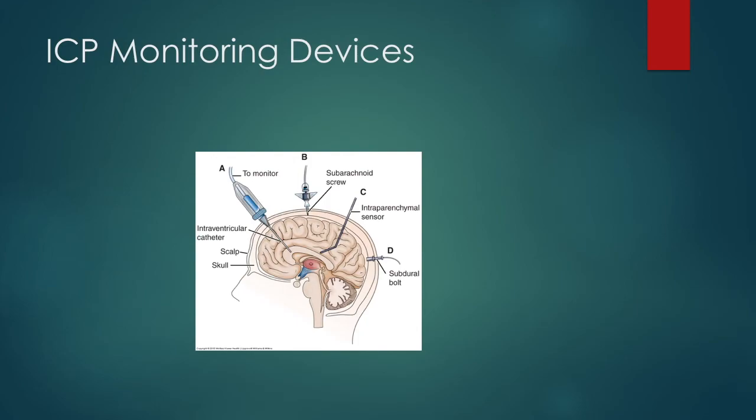This is a picture of some of the monitoring devices. We can put our ICP monitor in there — it actually just monitors the pressure. You can see some of those subarachnoid screws and bolts. All of these are different monitoring devices in different locations. For all of them, remember we have to keep that head in that neutral position and minimize our nursing care — cluster our care.